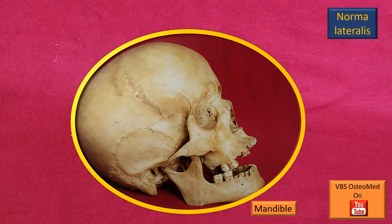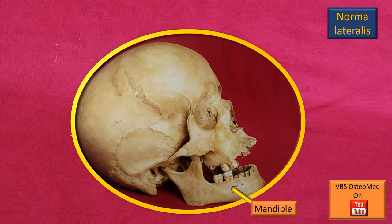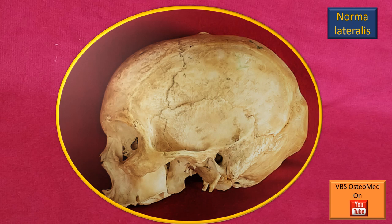When you look at the Norma Lateralis, it is in two parts: one is the lateral view of the skull, and below that the lateral view of the mandible. For discussion purposes, we will add or subtract the mandible as required, because the mandible blocks the view of regions like the infratemporal fossa. With the mandible removed, this gives a clearer picture of the details of Norma Lateralis, and we will add the mandible as required.